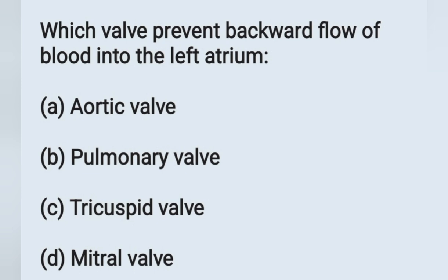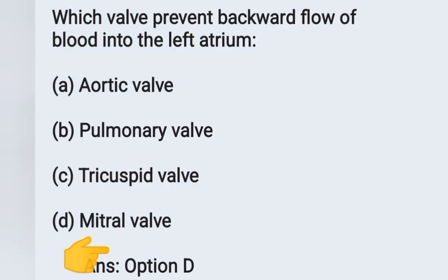Next question: which valve prevents backward flow of blood into the left atrium? Options: (a) aortic valve, (b) pulmonary valve, (c) tricuspid valve, (d) mitral valve. The correct answer is option D, the mitral valve, which prevents backflow of blood into the left atrium.